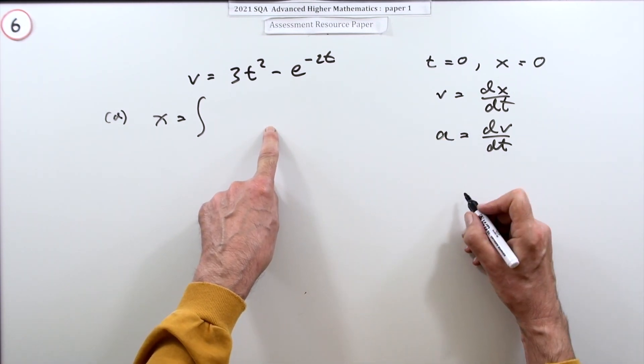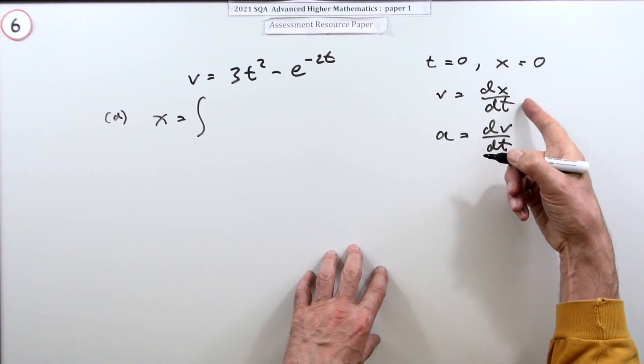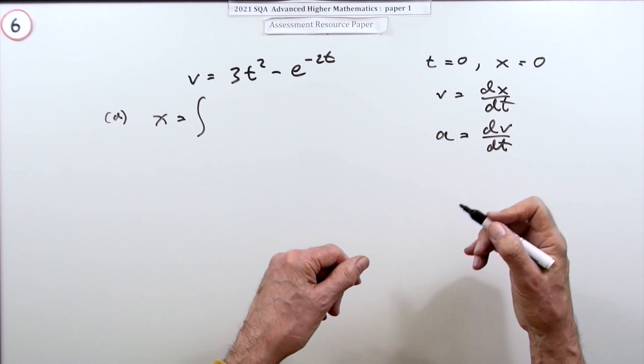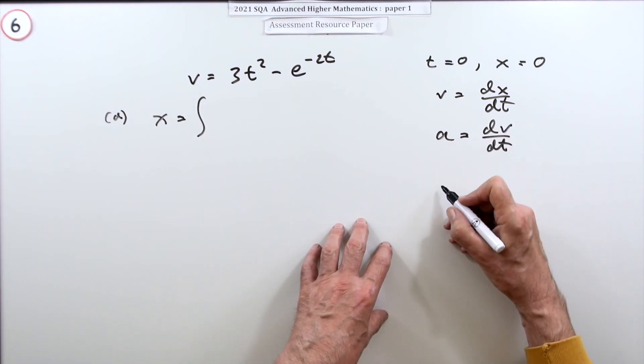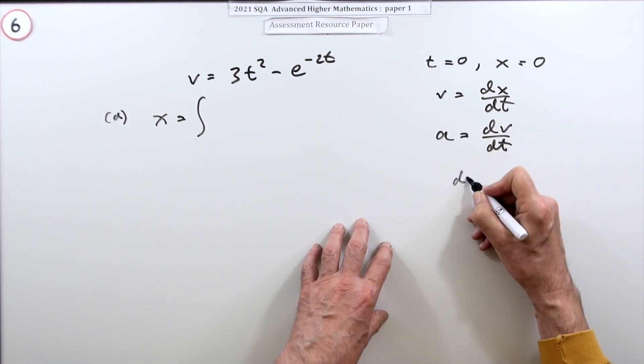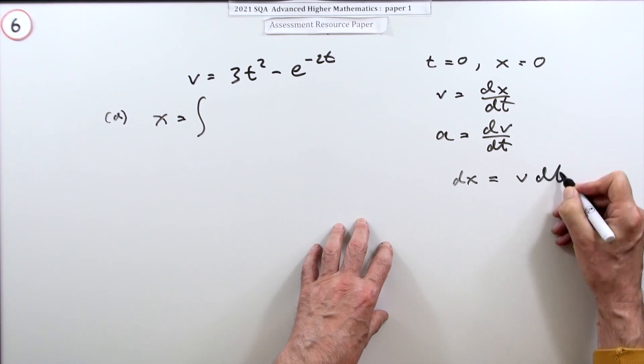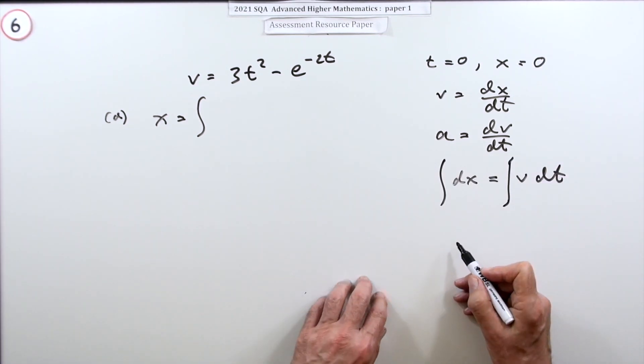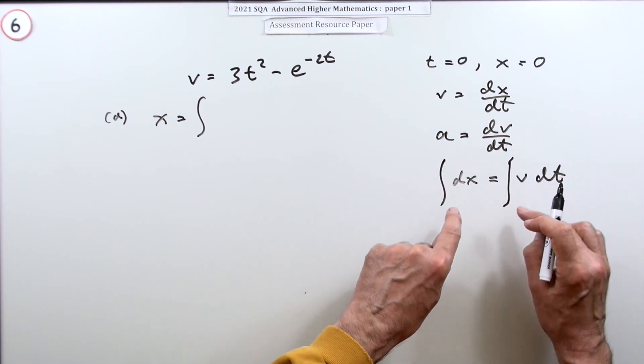If I was to split that apart, you don't need to do this or know this - it's the sort of thing you'd be doing in mechanics if you had particular values to work out. If you rearrange that, it would be dx equals v dt. If you integrate that up, it's not very good.